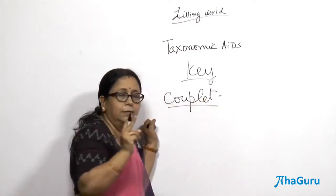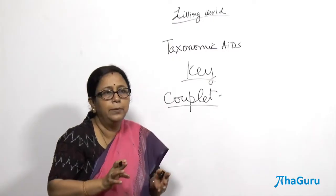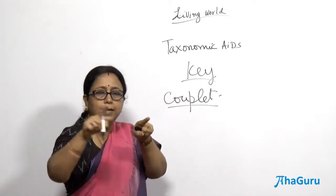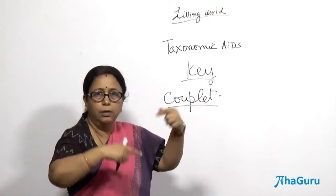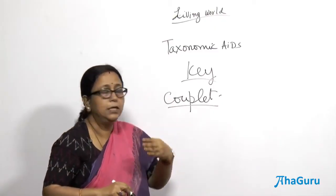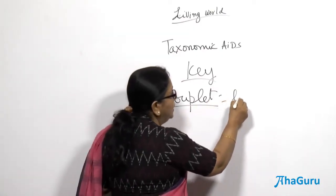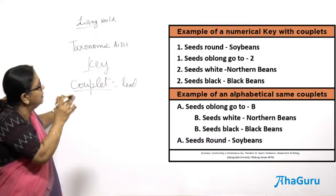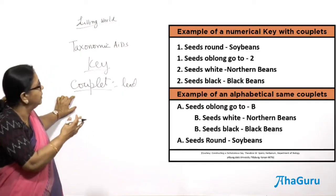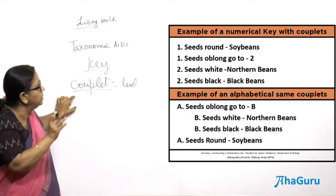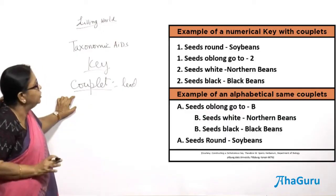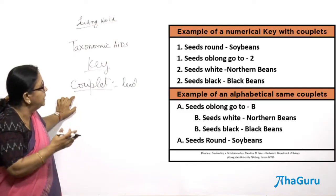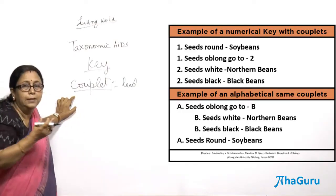A couplet will have two sentences with contrasting characters — for example, 'the flower is red' versus 'the flower is white.' You check which applies and move to the next point. For instance: if seeds are round, it is soya beans; if seeds are oblong, go to step two — where you check if the seed is white (northern beans) or black (black beans). Each sentence in a couplet is called a lead, because it leads us to the next sentence.